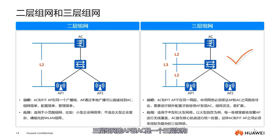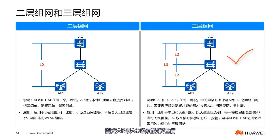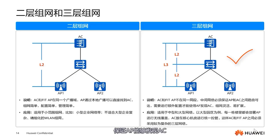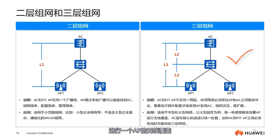Now let's look at layer 3 networking. In layer 3 networking, APs and ACs are in a three-tier architecture, connected through switches in between, and AC and AP are on different network segments. APs must be able to communicate with ACs, so some additional configurations are required to ensure APs can discover ACs. Layer 3 networking is widely used, especially in medium to large campuses, where each building might be covered by an AP.